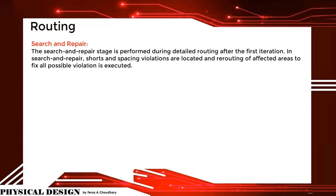The search and repair stage is performed during detailed routing after the first iteration. In search and repair, shorts and spacing violations are located, and rerouting of affected areas to fix all possible violations is executed.